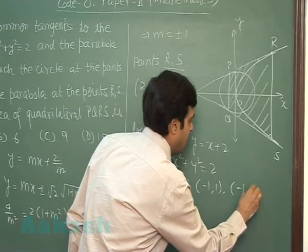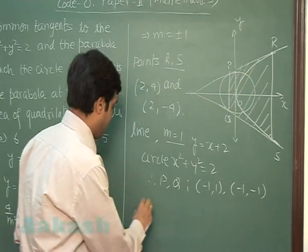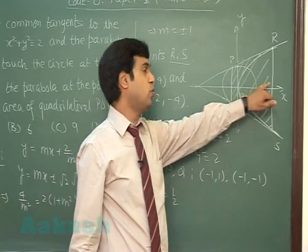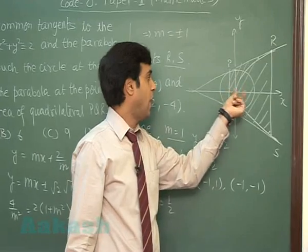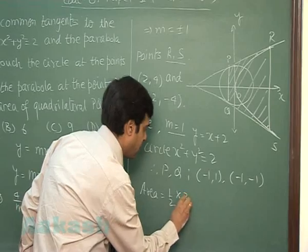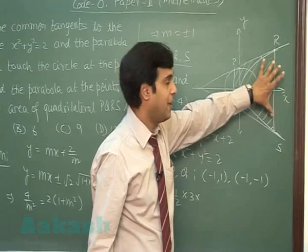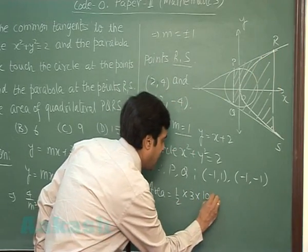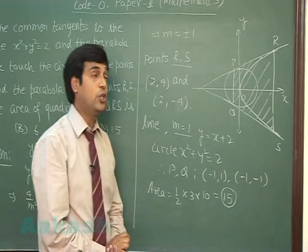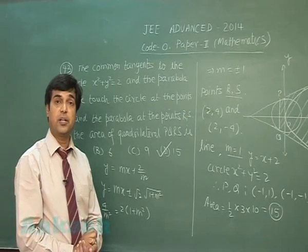Area of the trapezium: half distance between the two parallel sides, 1 + 2 that is 3, multiplied with sum of the parallel sides, that is 2 + 8 giving me 10. So the required area is 15 square units. So we can see option D is correct.